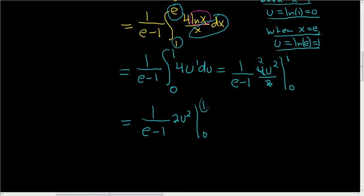First we plug in the 1 for u, so we end up with 2 over e minus 1, because 2 times 1 squared is 2.